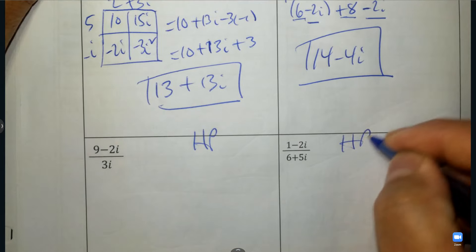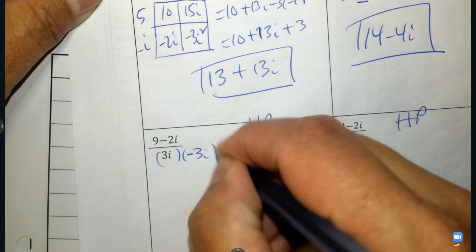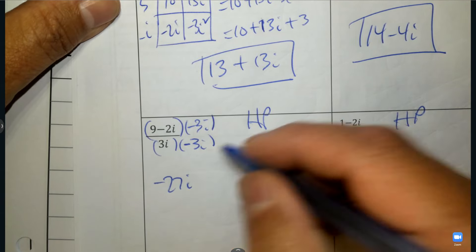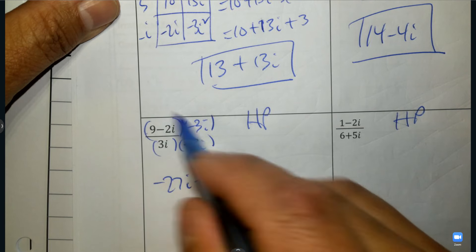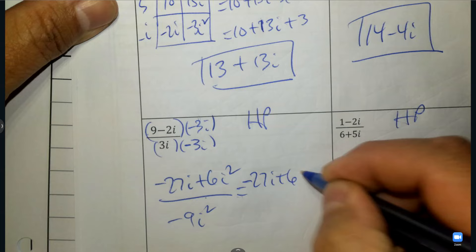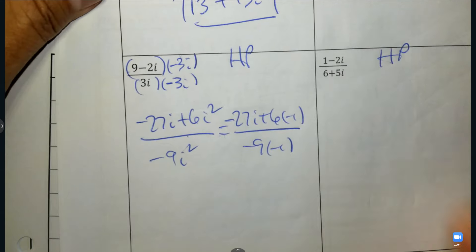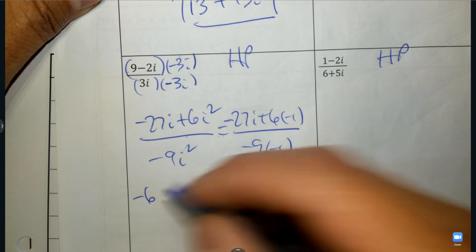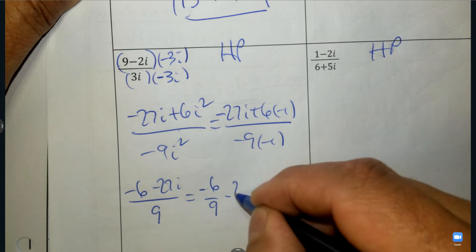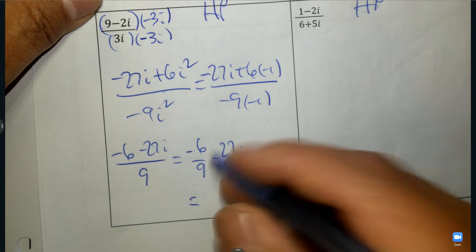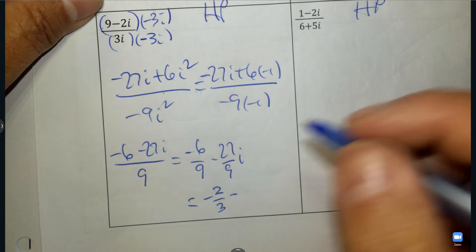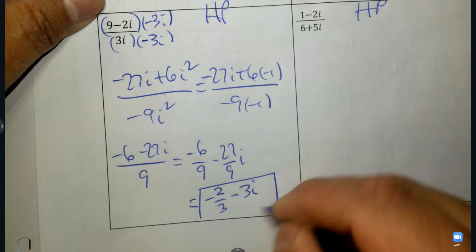This is for the HP friends — dividing. We have to do what's called the conjugate: the opposite sign, top and bottom. So that is negative 27i plus 6i squared. We multiply top and multiply bottom, and that's negative 9i squared on the bottom. Then plug in negative 1 for i squared. So I have negative 6 minus 27i over positive 9. I'm going to separate it into the real number and the imaginary number, then divide by 3. And 27 divided by 9 is 3. And there's your answer.